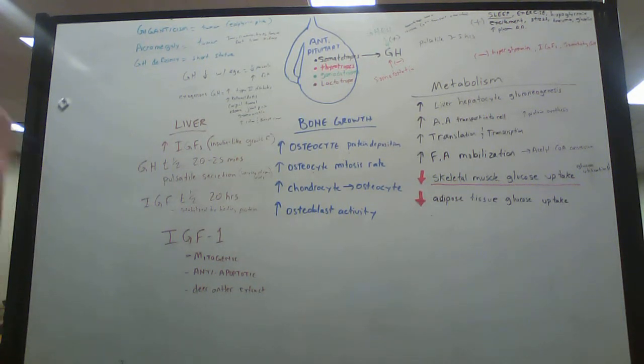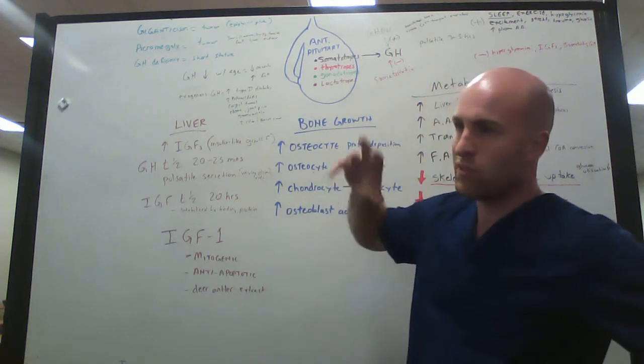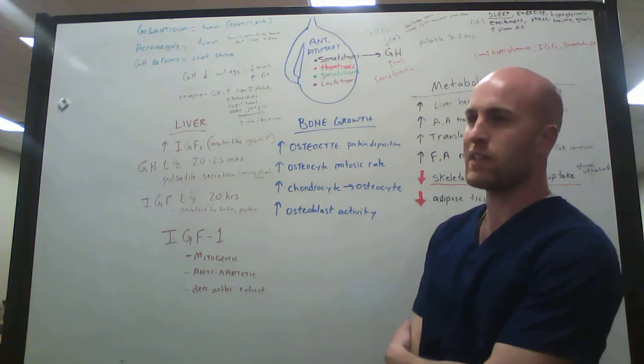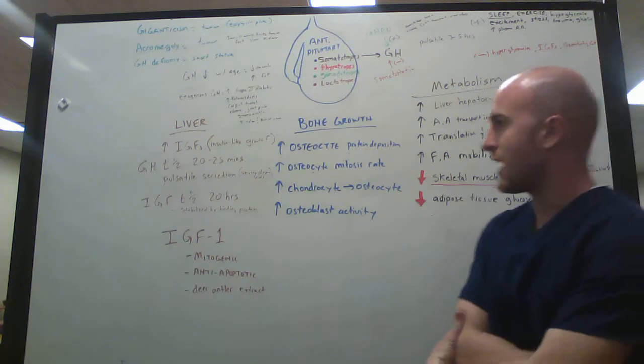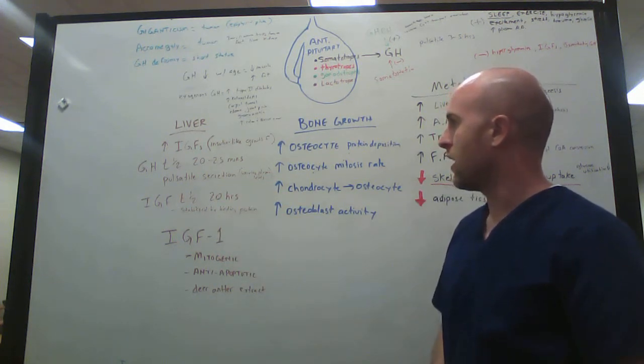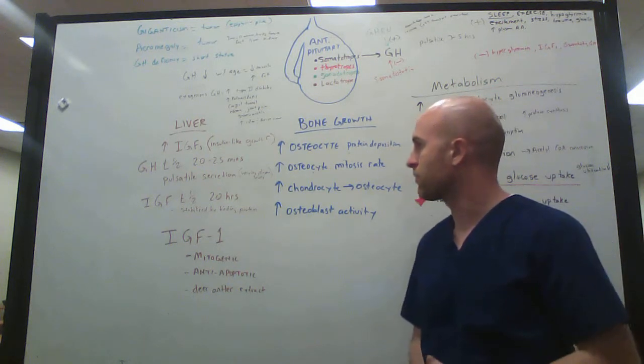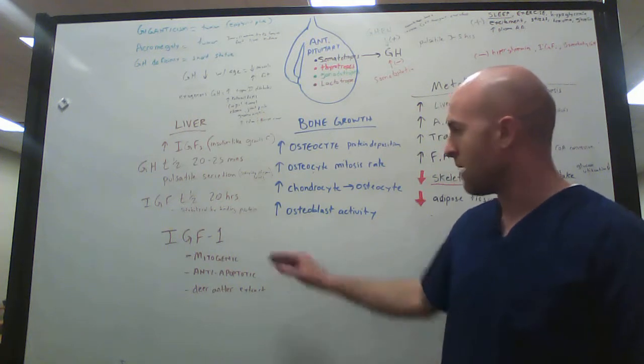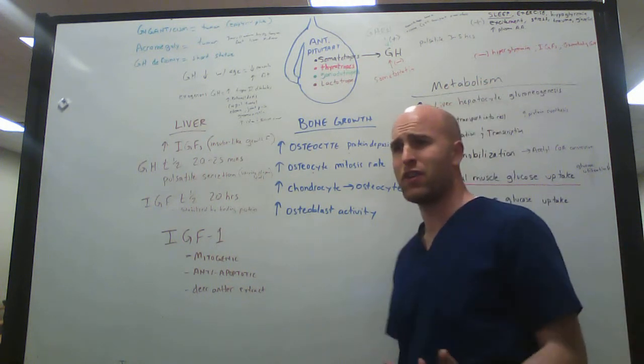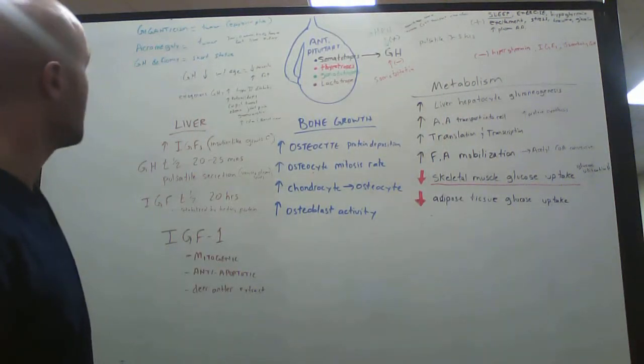What else? It also has some effects in the liver. The main effect in the liver is that when exposed to growth hormone, it produces insulin-like growth factor, which has some homologous amino acids with insulin, which is why it's called insulin-like growth factor. Growth hormone itself has a half-life of about 20 to 25 minutes, whereas insulin-like growth factor has a half-life of like 20 hours. It's stabilized by a binding protein. The most important of all the insulin-like growth factors is IGF-1. This is mitogenic, which means it causes cells to divide more, and it's also anti-apoptotic, which means it prevents cells from being killed. Apparently they can find it in the velvet on deer antlers, extract it, and give it to people when it acts like a growth hormone. And I believe that is everything that is on this lecture.